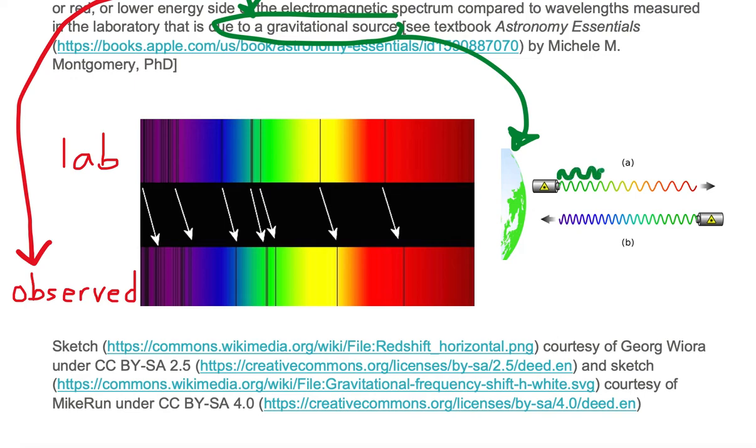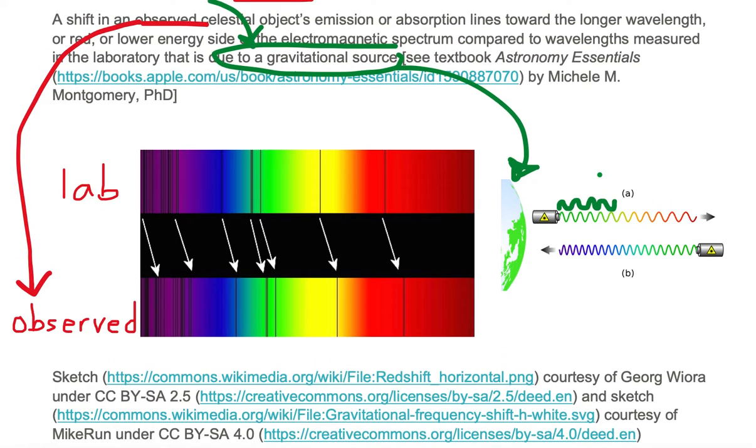As the waves climb out of the gravitational potential well of planet Earth, the waves get stretched into a longer wavelength. We see them get stretched into the color yellow, and then we see them get stretched into the color orange, and then we see them get stretched into the color red.